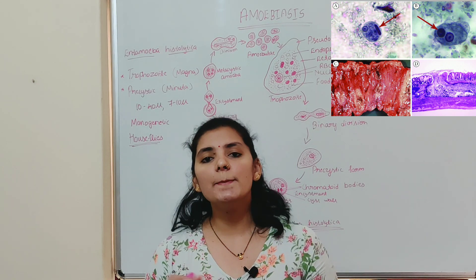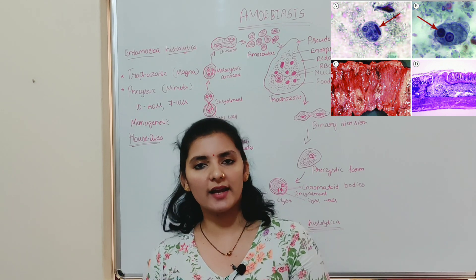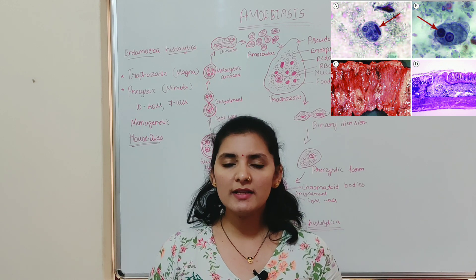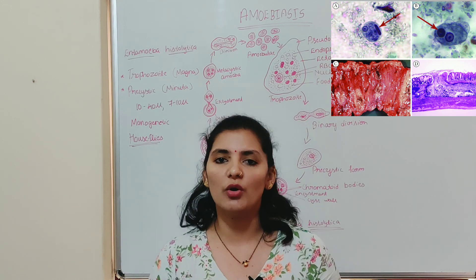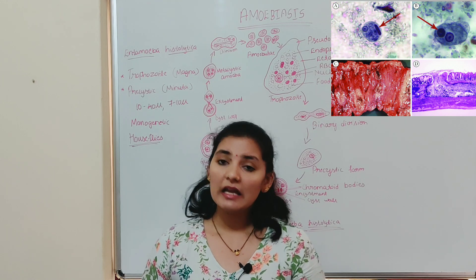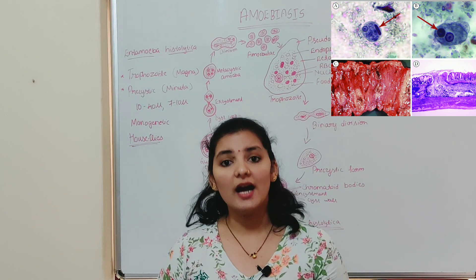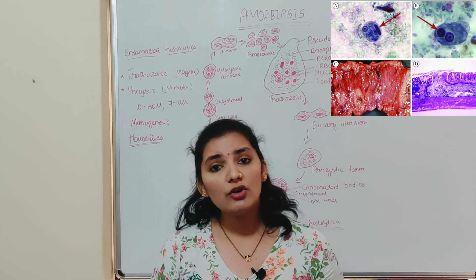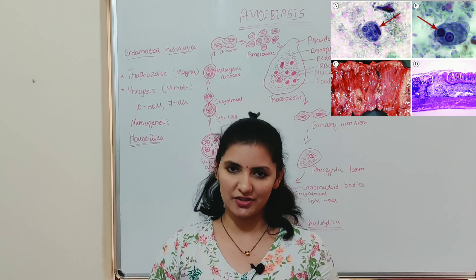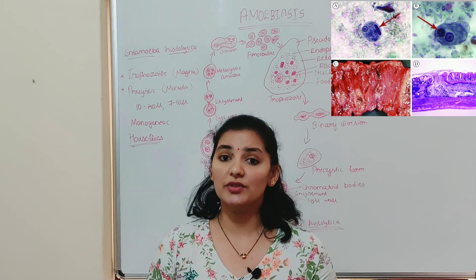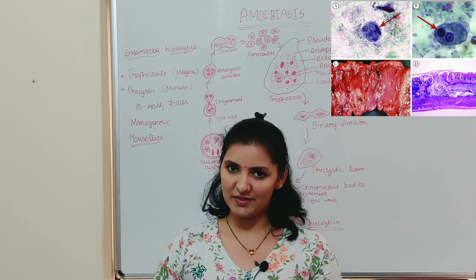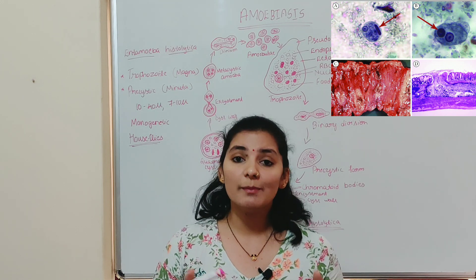Entamoeba histolytica is a microscopic organism and it lives as an endoparasite in the upper part of the large intestine of human beings — specifically in the colon. Being an endoparasite, it feeds on the tissues of the wall of the large intestine, thereby resulting in severe ulcers and abscesses, which are the main symptoms of amoebiasis or amoebic dysentery.